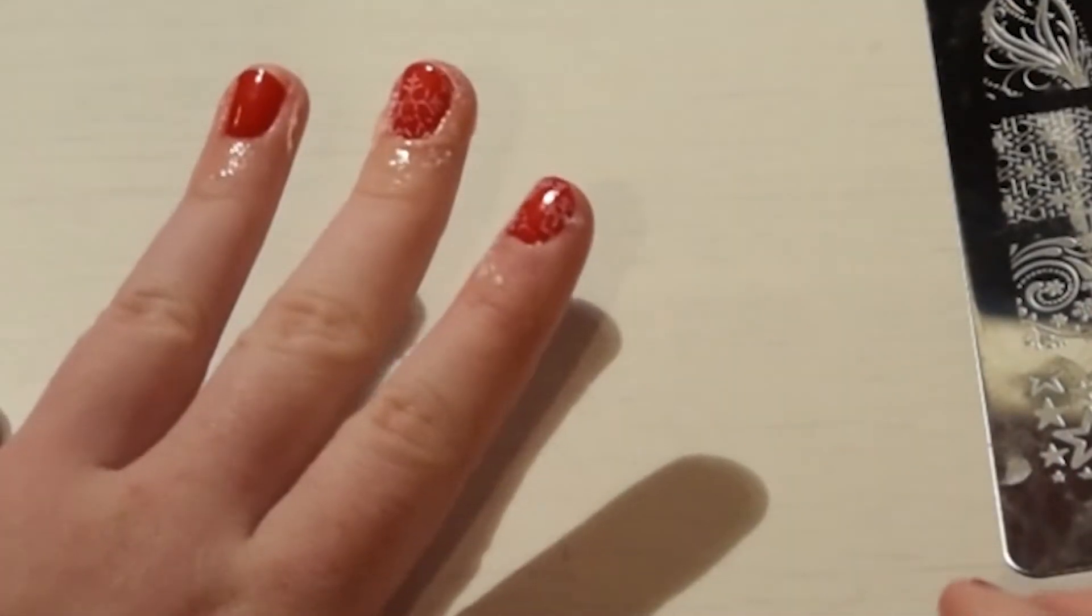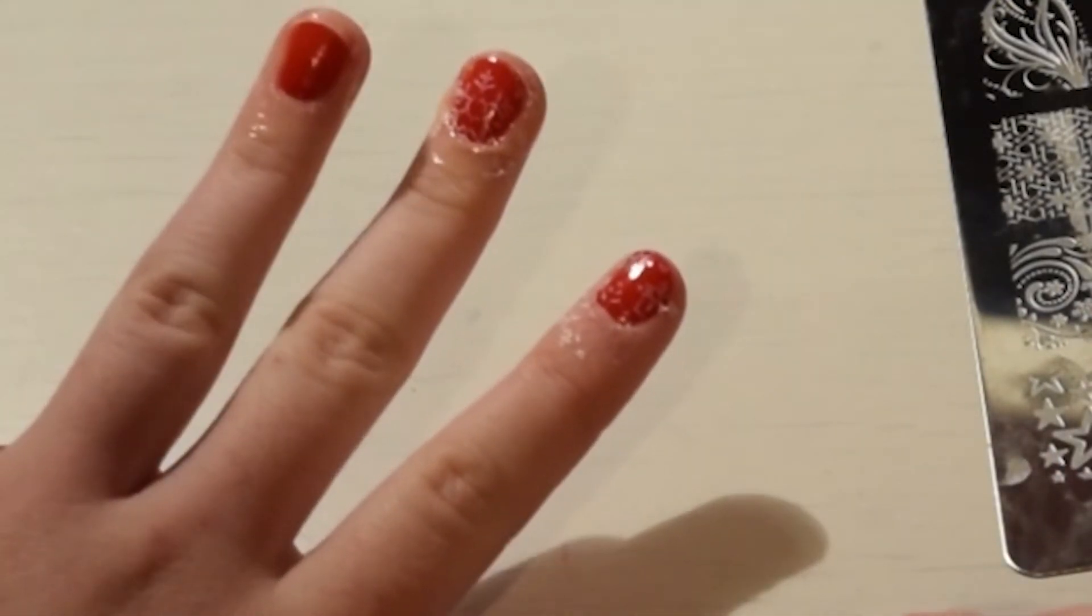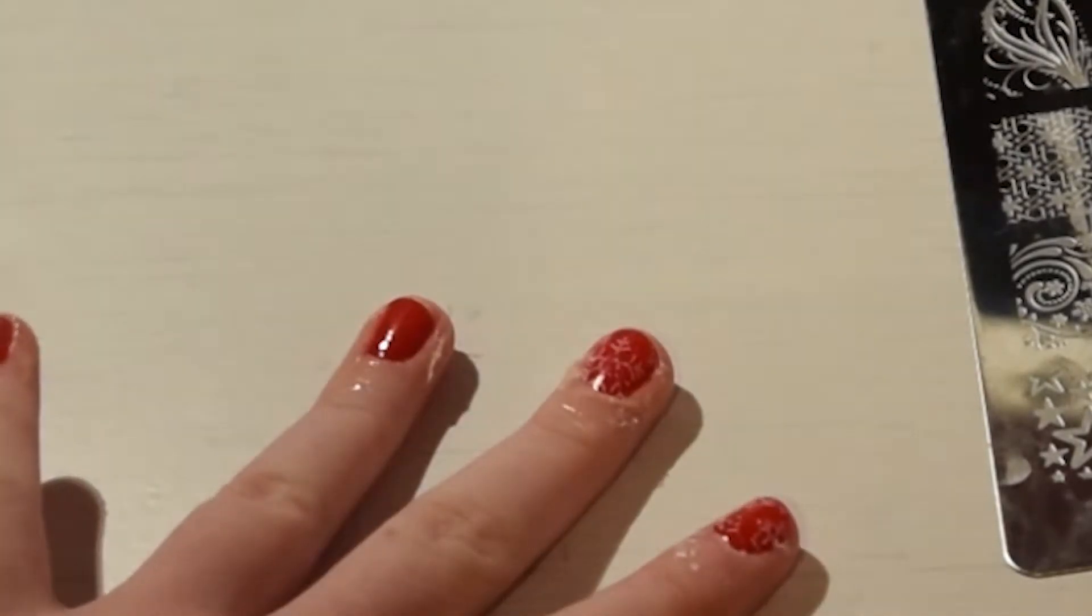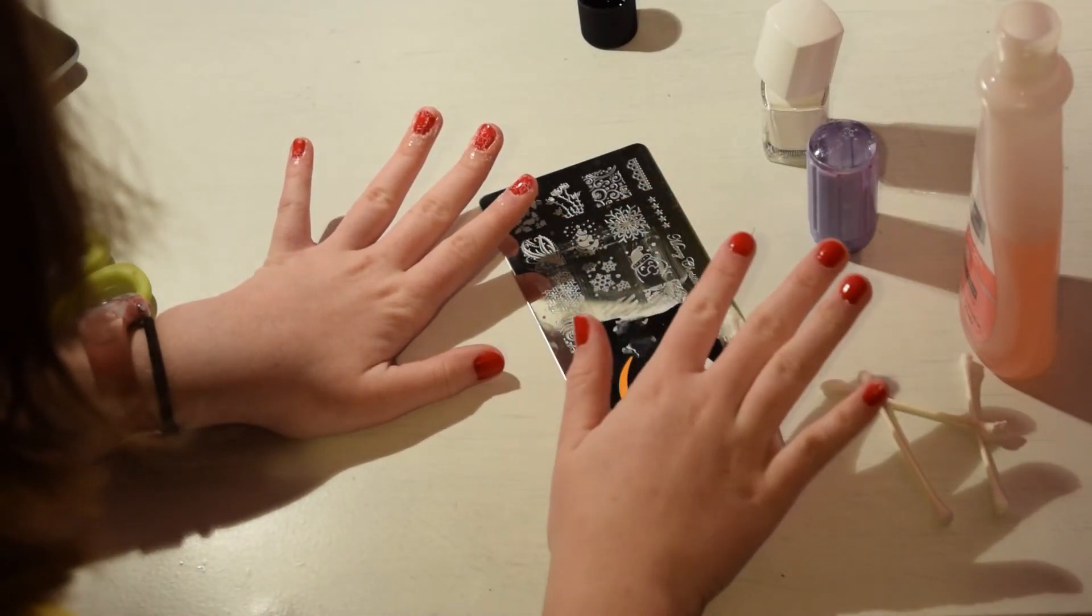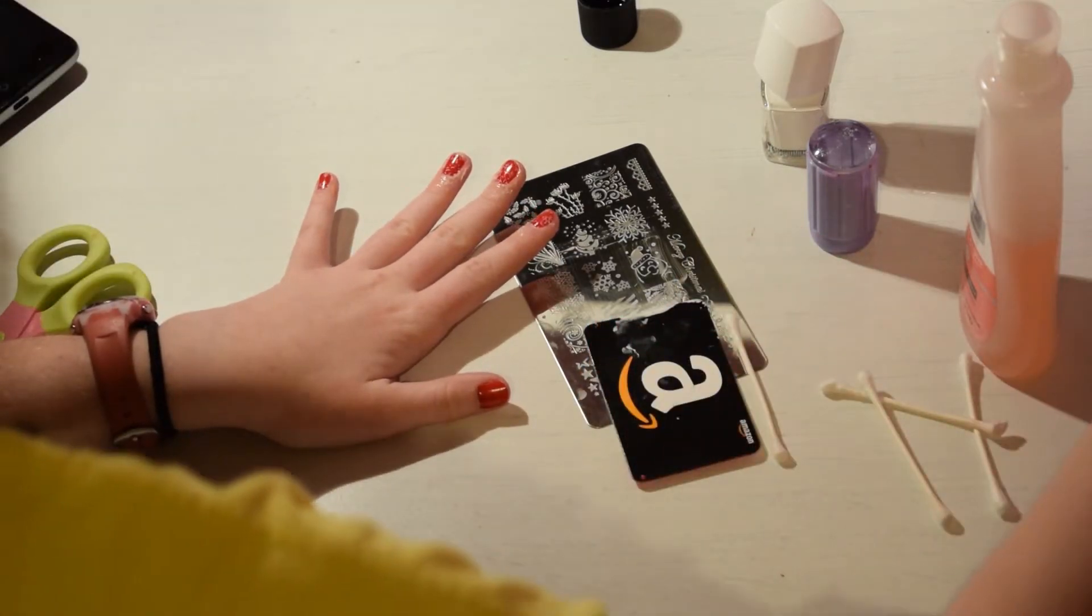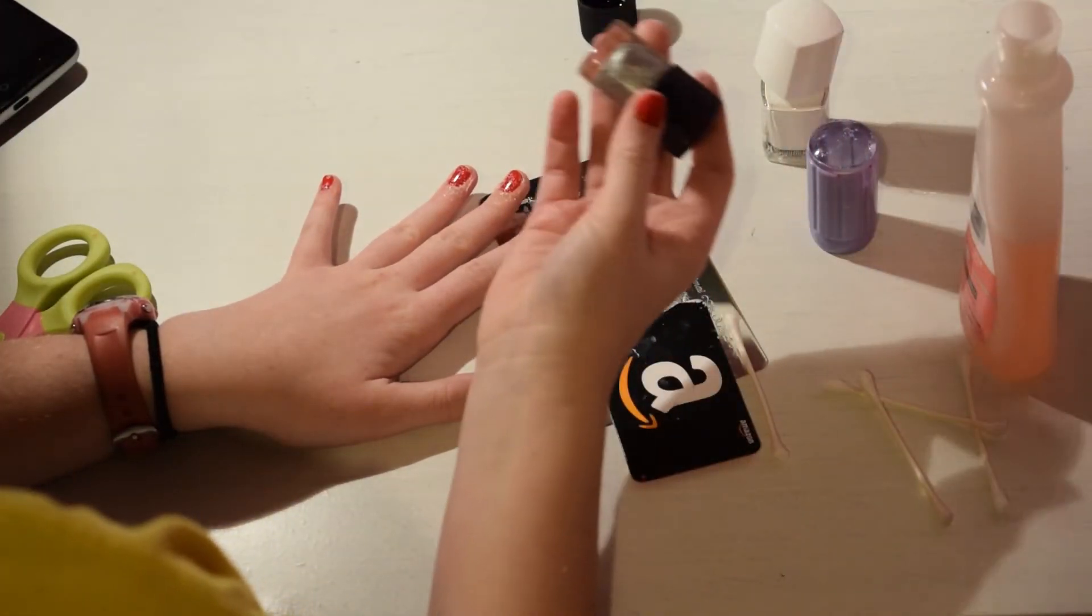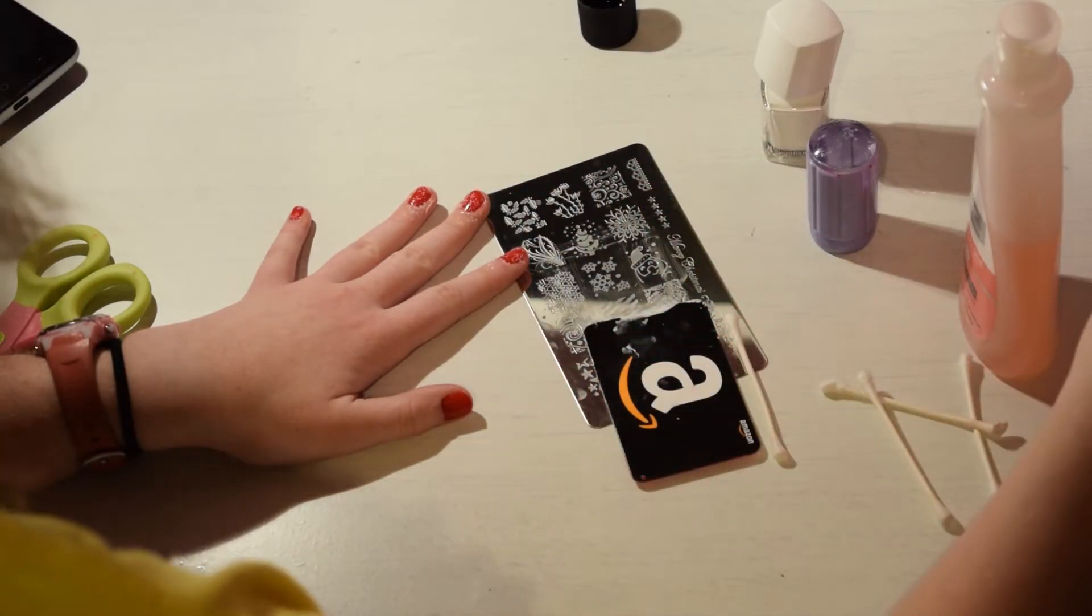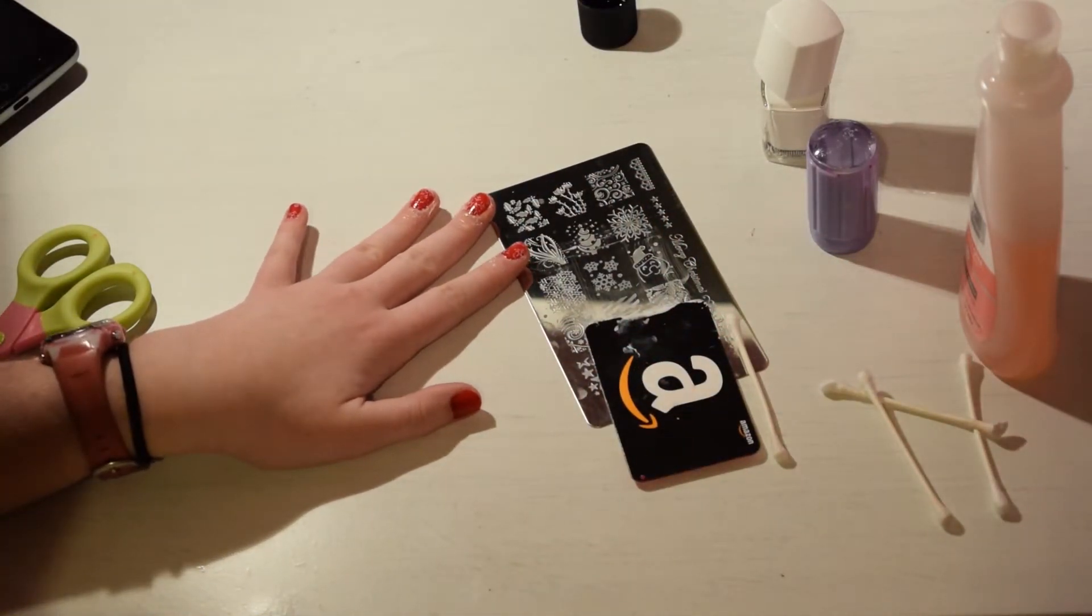My only issue is the white doesn't show very well because it's probably cheap nail polish. So now I'm just gonna do the rest of my nails like this and then I'm also going to add silver with the same thing on the top just to add detail and then I'll show you how it looks like when I'm done.